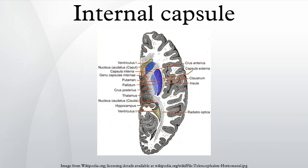Other fibers within the internal capsule: the retrolenticular part contains fibers from the optic system, coming from the lateral geniculate nucleus of the thalamus, and more posteriorly this becomes the optic radiation. Some fibers from the medial geniculate nucleus also pass in the retrolenticular internal capsule, but most are in the sublenticular part. The sublenticular part contains fibers connecting with the temporal lobe, including the auditory radiations and temporopontine fibers.